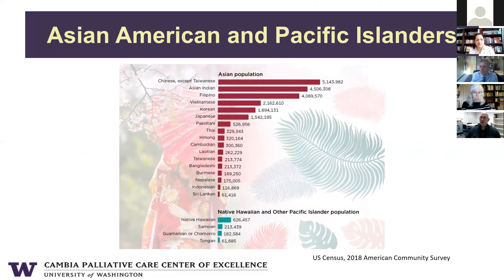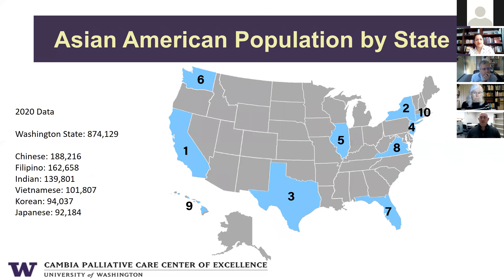The largest Asian American subgroup in the U.S. is Chinese Americans at over 5 million, followed by Indian Americans, Filipino Americans, Vietnamese Americans, Korean Americans, and Japanese Americans. Looking at states with the largest Asian American populations, not surprisingly there are coastal states, as well as Illinois, Texas, and Washington — which ranks sixth. As of 2020, there were almost 875,000 Asian Americans living in Washington state.